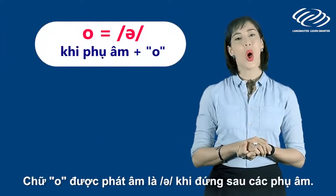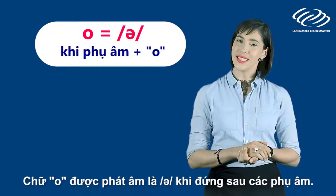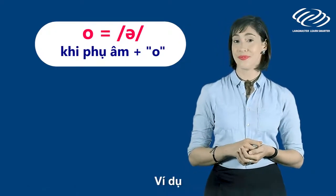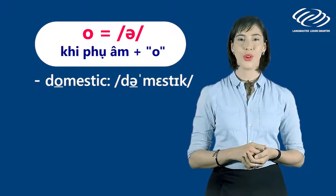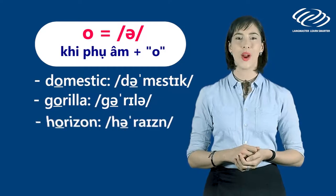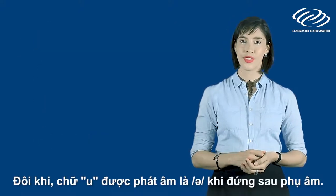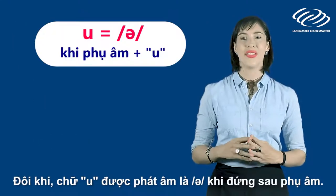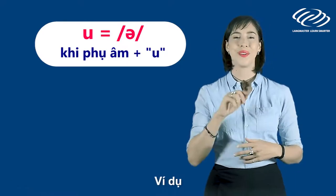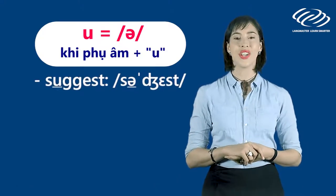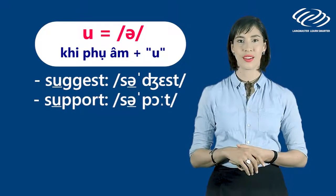The letter O is pronounced as 'uh' when it comes after consonants in some cases. For example: domestic, gorilla, horizon, computer. Sometimes the letter O is pronounced as 'uh' after a consonant — for example: suggest, support, supply.